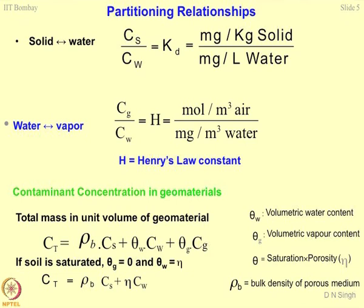Then this equation reduces to Ct equal to bulk density of the system multiplied by Cs plus porosity multiplied by Cw. The application of this equation is: if you want to find out the concentration of contaminants present in the porous media, you can substitute the values of density and porosity, and if you know Cs and Cw, you know the Ct value. This is the practical situation you normally deal with in professional activities — what is known as concentration determination in a porous system, or the fate of contaminants.